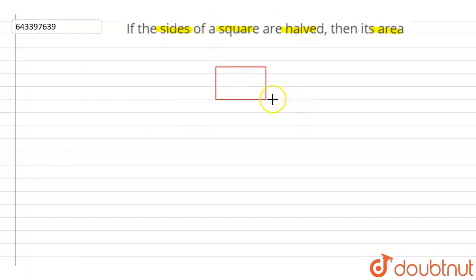This is the square. Now side of this square is halved, that means reduced by 2.